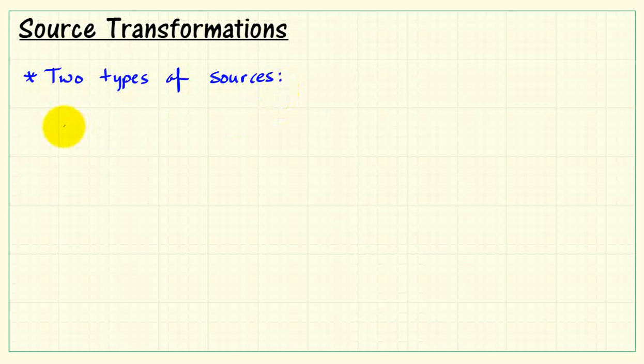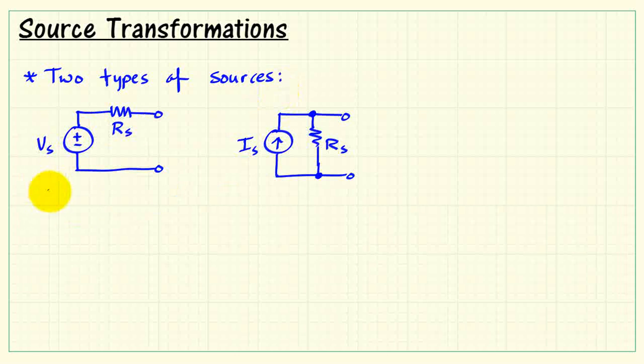Well, I'd like to introduce the notion of source transformations and then show you how this can be applied to find the Thevenin equivalent of a circuit. We have two possible sources. Sometimes people refer to these as practical sources because they include finite resistance.